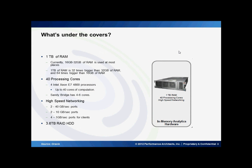What's under the covers of this beast? The biggest part is there being 1TB of RAM. Currently most machines considered to be beefy have between 16 and 32GB of RAM. 1TB of RAM is 32 times bigger than 32GB of RAM and 64 times bigger than 16GB of RAM — so this thing is a pretty impressive beast. It's also got 40 processing cores, whereas beefy servers these days have about 4 to 6 cores, so having 40 is a pretty big thing.